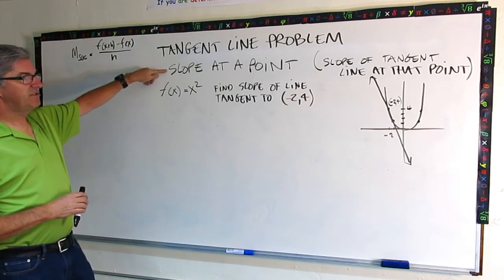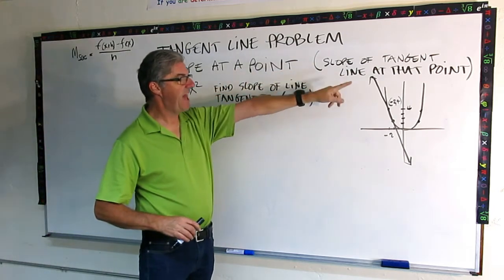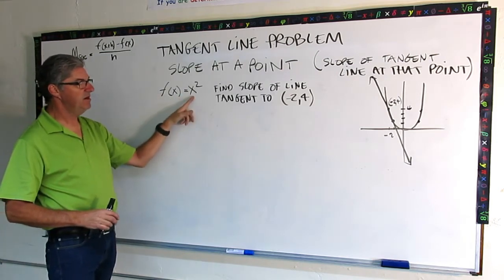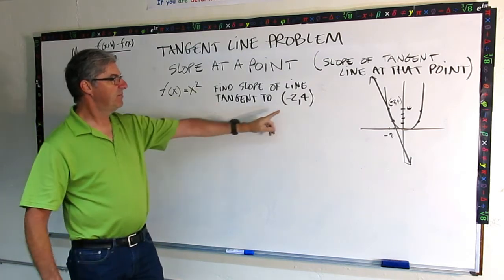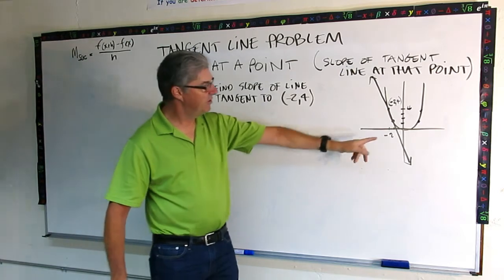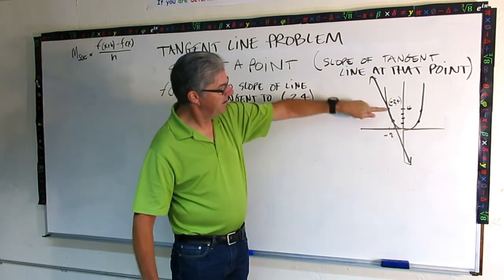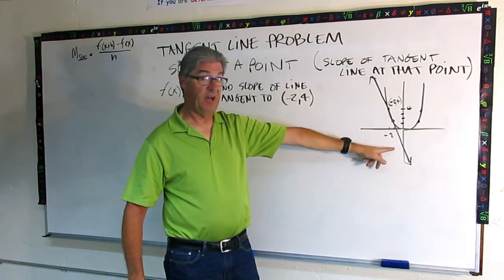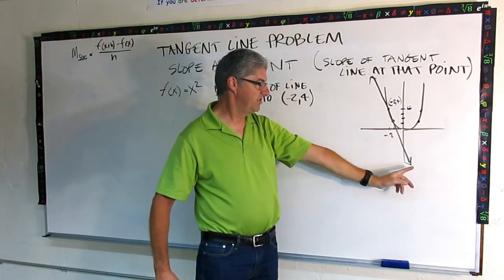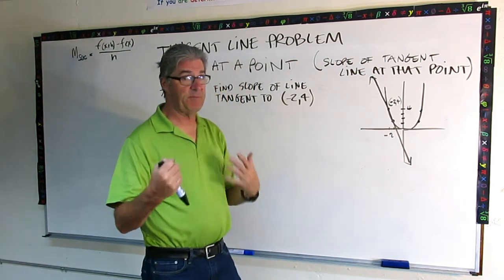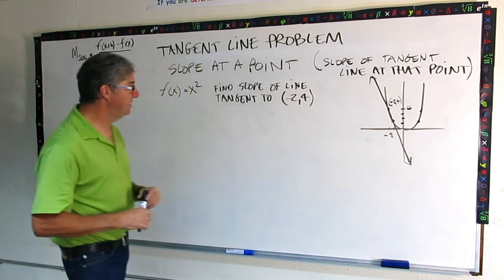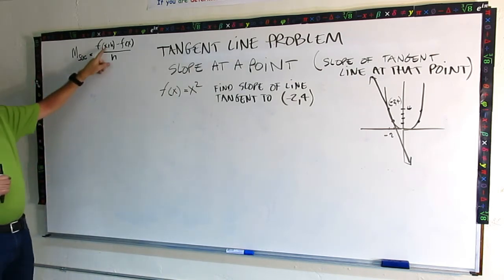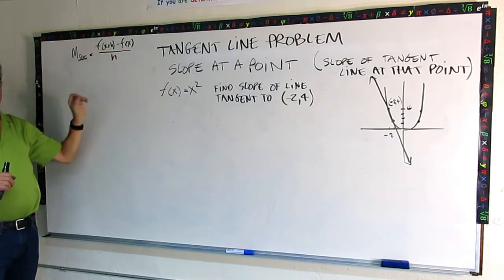So what we're going to do is we're going to find the slope at a point. This is the slope of a tangent line at that point. So here's our function. Basic quadratic function, f of x equals x squared. We're trying to find the slope of a line tangent to the point at negative two, four. Just as a review, here's our function. Basic parabola, vertex on the origin. Here's our point, negative two, four. We're looking for the slope of that tangent line. First off, you could tell it's negative, right? We have a decreasing function. So the slope of the tangent line should be negative. So when we're done with this, if we end up with a positive number, we know we're not correct.